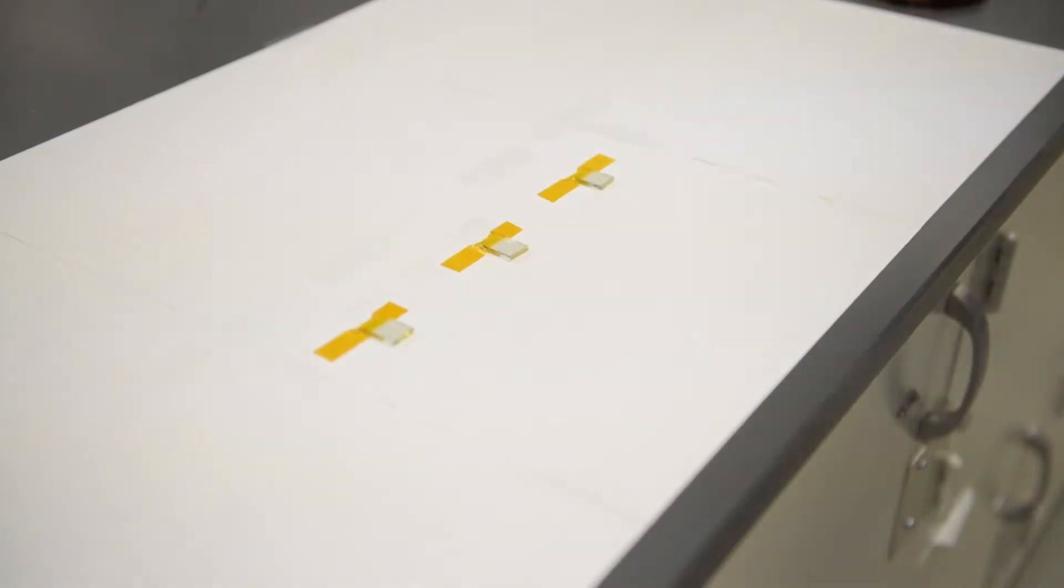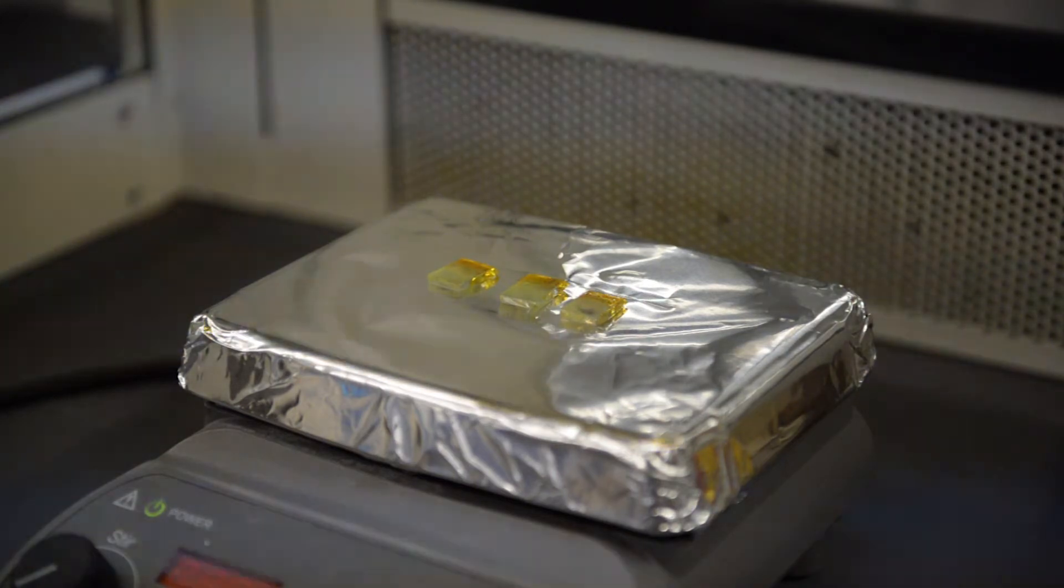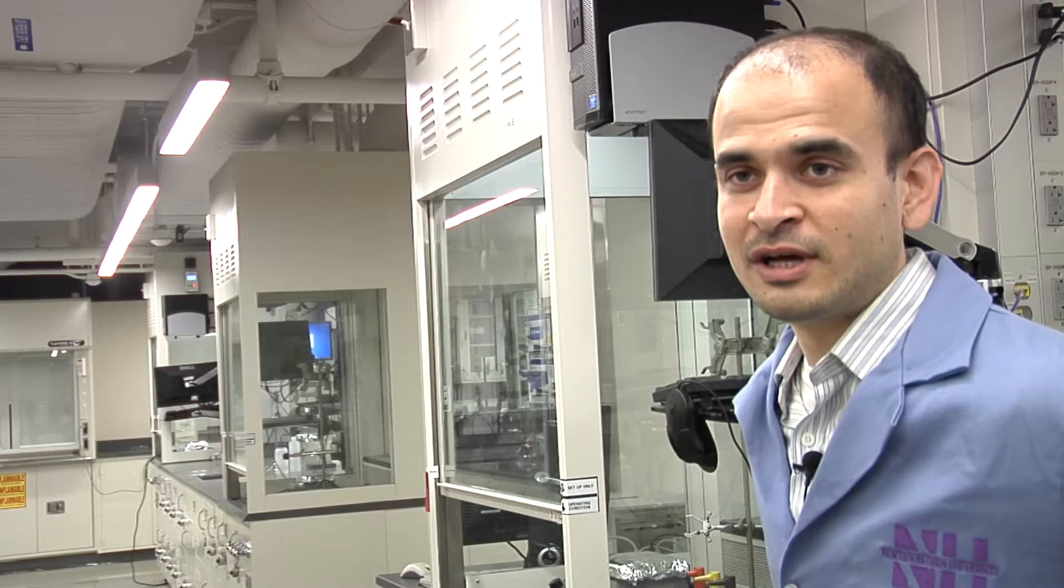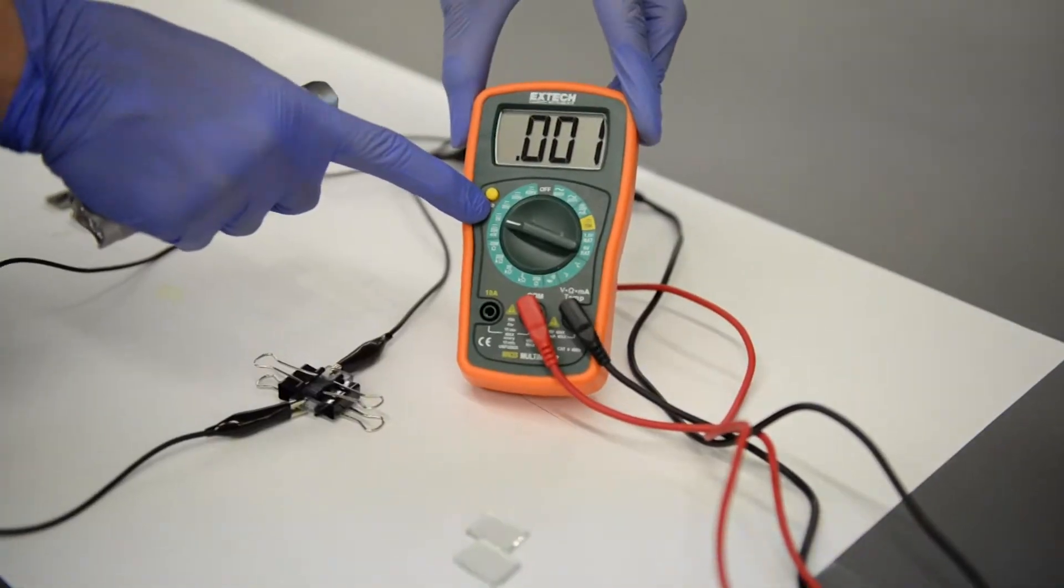So the key material is perovskite, a light absorbing material, and it's a very simple sandwich design. At the end of it, you have a solar cell, and you can measure current and voltage coming out of it to show that it's converting sunlight into electricity.